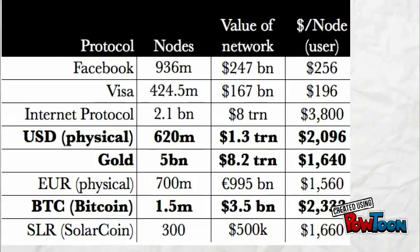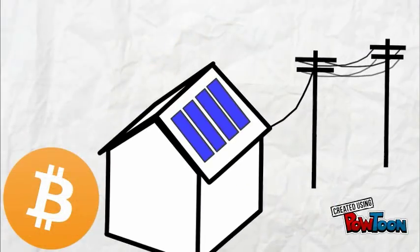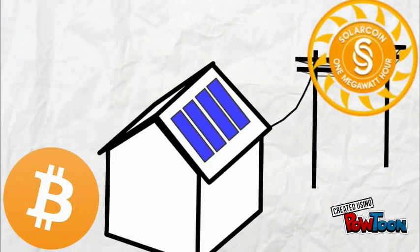Knowing the magic of social protocols, we can create new protocols to incentivize good things, because the value that emerges from a protocol is something economists call an externality, and that positive externality can be used in good ways. Solar coin is a new protocol — it's built on top of bitcoin technology, and solar coin links solar energy production and people. Anyone who produces one megawatt hour of solar energy receives one solar coin.